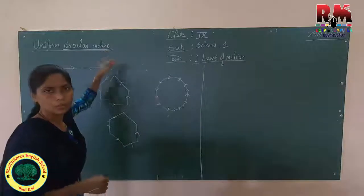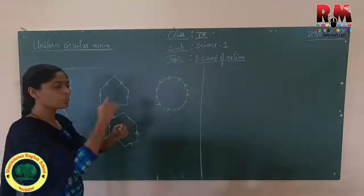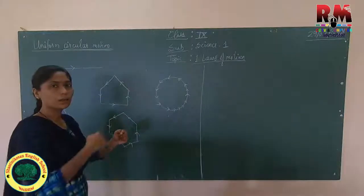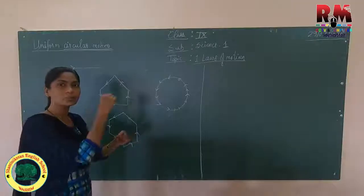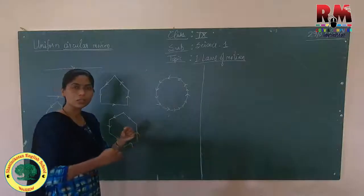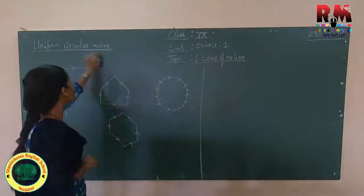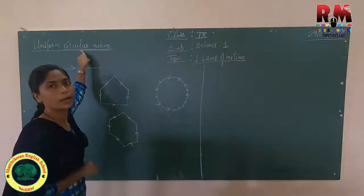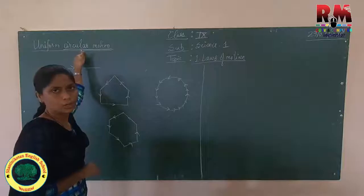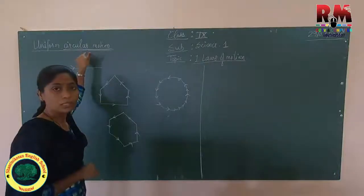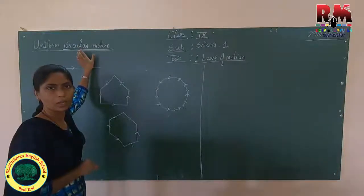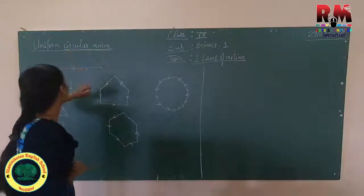So by continuously changing the path, this motion is said to be Circular Motion — an object moving in a circular path is said to have Circular Motion.